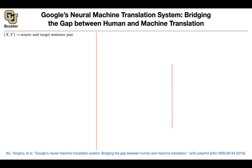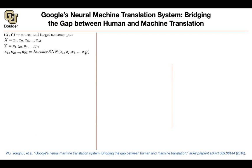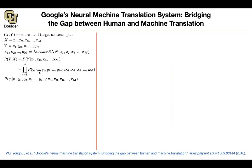A quick recap of the problem setup. You have source and target pairs of sentences — X is your input sentence, and you have your output sentence; they can have different lengths M and N. You take your input sentence and use an RNN to encode it — an LSTM, GRU, whatever you have. It takes a sequence and outputs another sequence. These bold vectors are the encodings. Then for translation you need to model this probability using the chain rule, breaking the problem apart and predicting one word at a time.